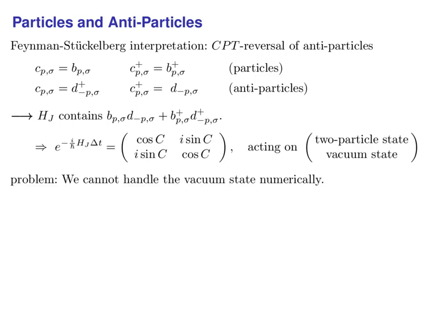When we spell out the time-evolution operator of the interaction in the fermionic Fock basis, we find that it performs a complex rotation between the two-particle state and the vacuum state. This coincides with our intuitive understanding of pair annihilation and creation. But there is a problem: we cannot handle a vacuum state numerically — when we try to do so, it results in infinite amplitudes. Fortunately, there is an alternative approach: the idea is to apply the Feynman-Stückelberg interpretation only in momentum representation. In position representation, we apply a Dirac-C interpretation instead.